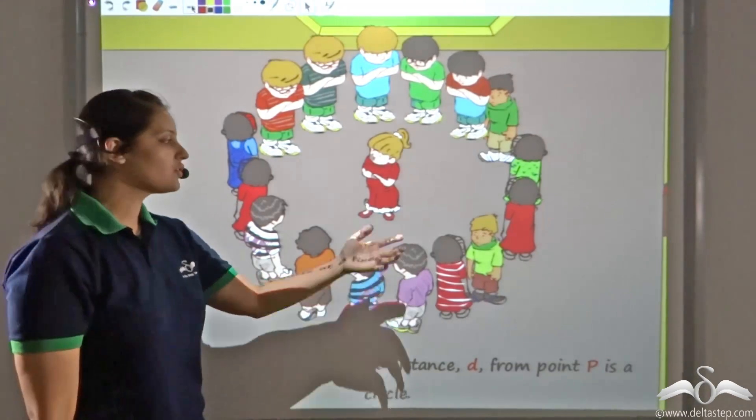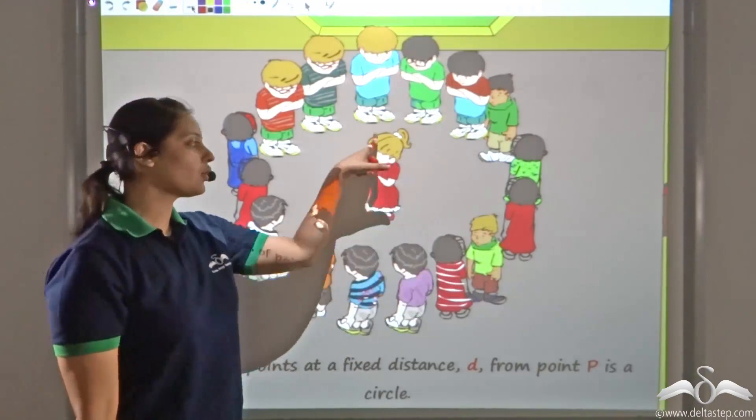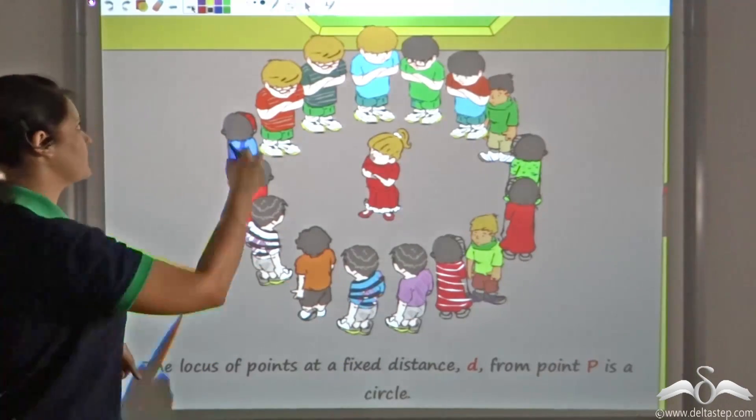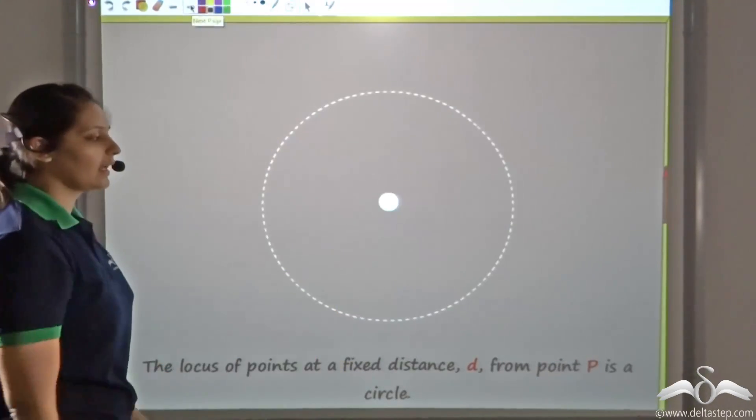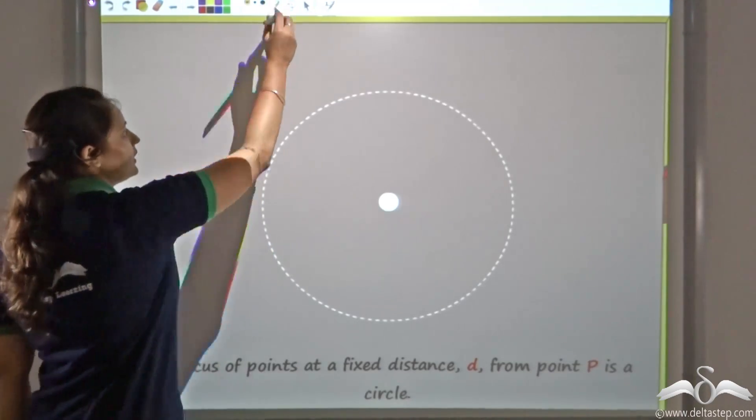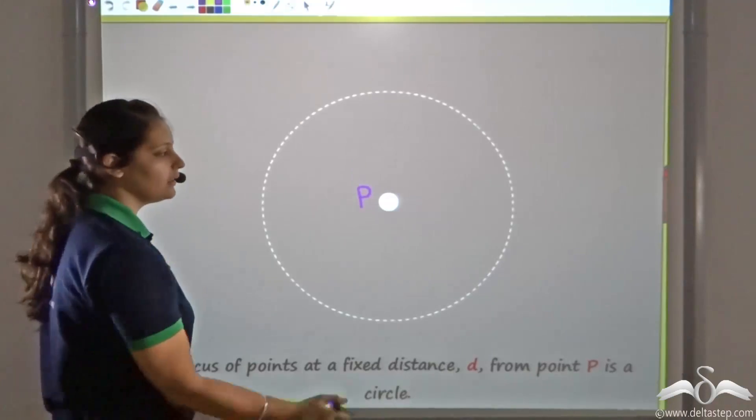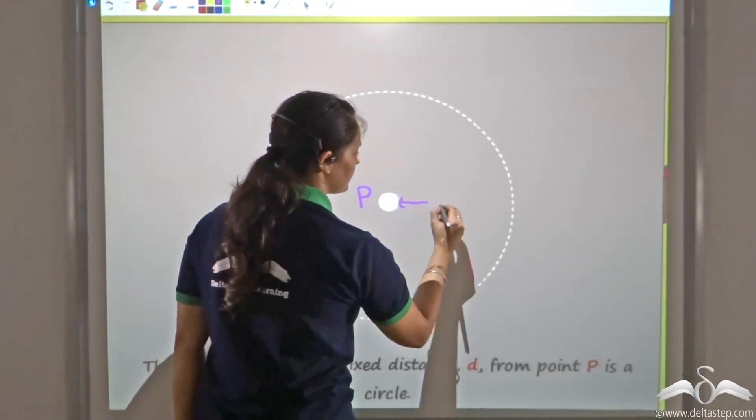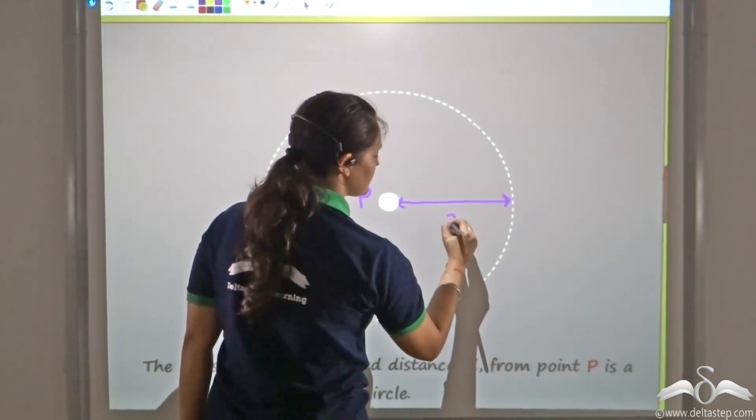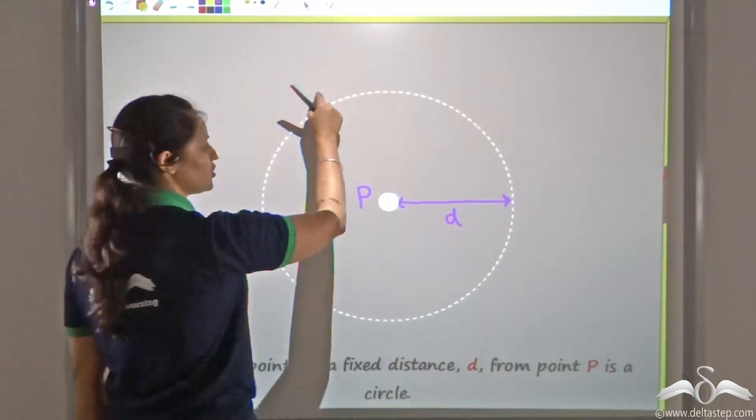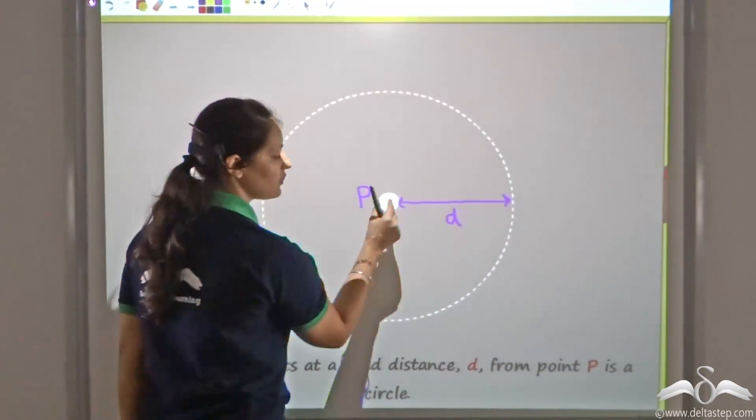So the locus of all points which are a fixed distance away from a fixed point gives me a circle. So this is what I get, where I can call this as the fixed point P which becomes the centre of this circle, this as the fixed distance D at which the students stand from this fixed point.